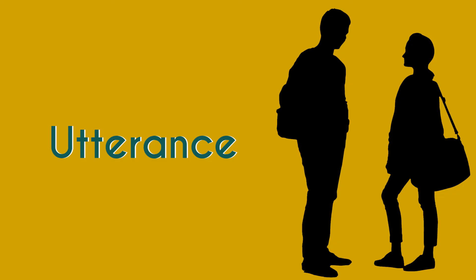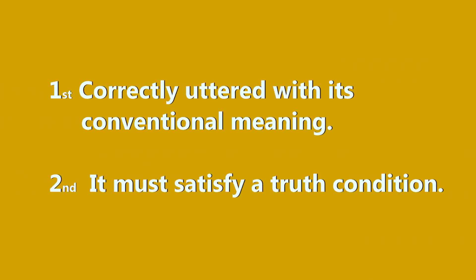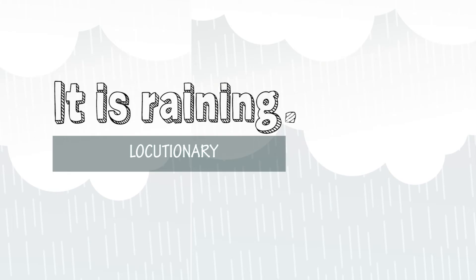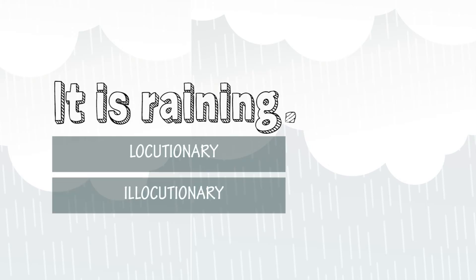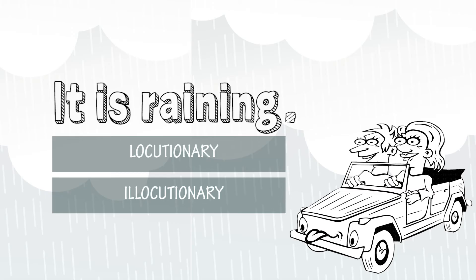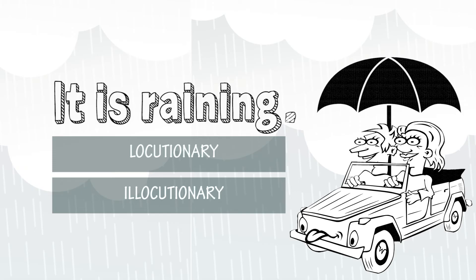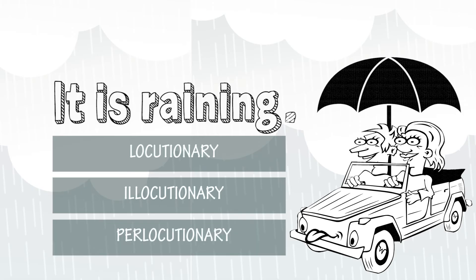For an utterance to be understood, it must be correctly uttered with its conventional meaning and must satisfy truth conditions. If you say 'it is raining,' it must actually be raining. The illocution sits on top of that conventional meaning as an added layer. For instance, if I'm in the car and you're leaving the house and I say 'it's raining,' I'm actually asking you to bring an umbrella — that's the illocutionary act. When you go get the umbrella, the perlocution takes place. If a locutionary act has an intention of causing something, it becomes illocutionary; if it succeeds, it becomes perlocutionary.